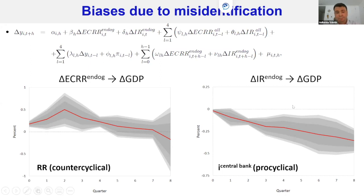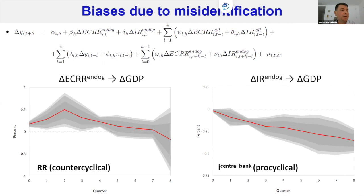Something similar but in a different direction occurs for the central bank policy rate. Endogenous changes in the central bank rate respond procyclically to GDP fluctuations — historically in our region, when GDP was going down due to capital outflows, negative terms of trade, or depreciation pressures, central banks typically increased interest rates to defend the exchange rate and avoid further capital flight. This shows the important implication of using a proper identification strategy.